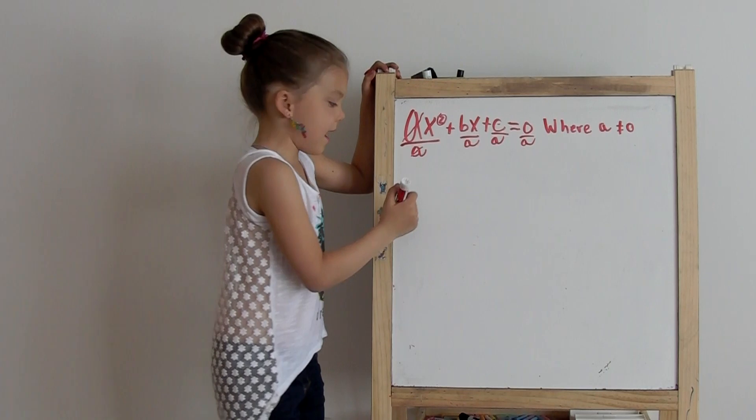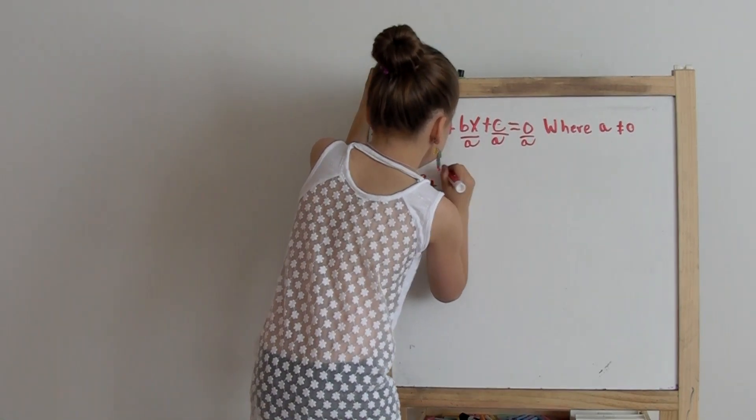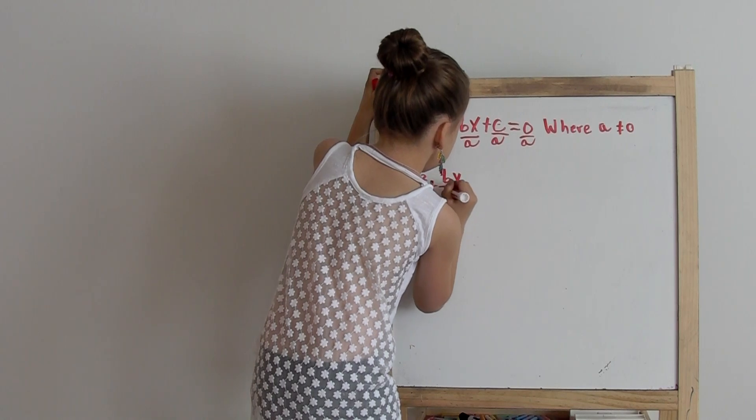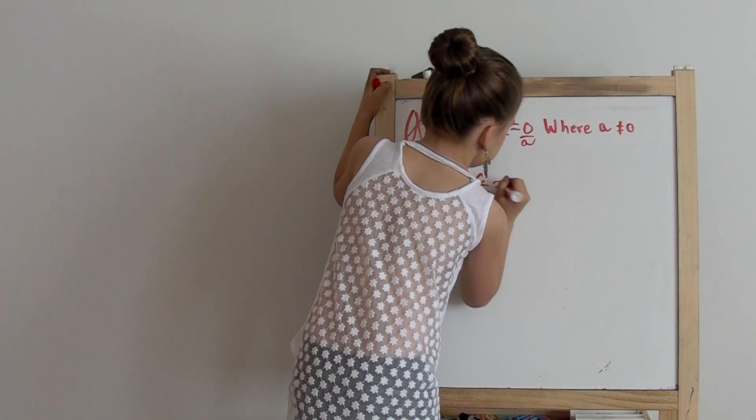So now we have x squared plus bx over a plus c over a equals 0.